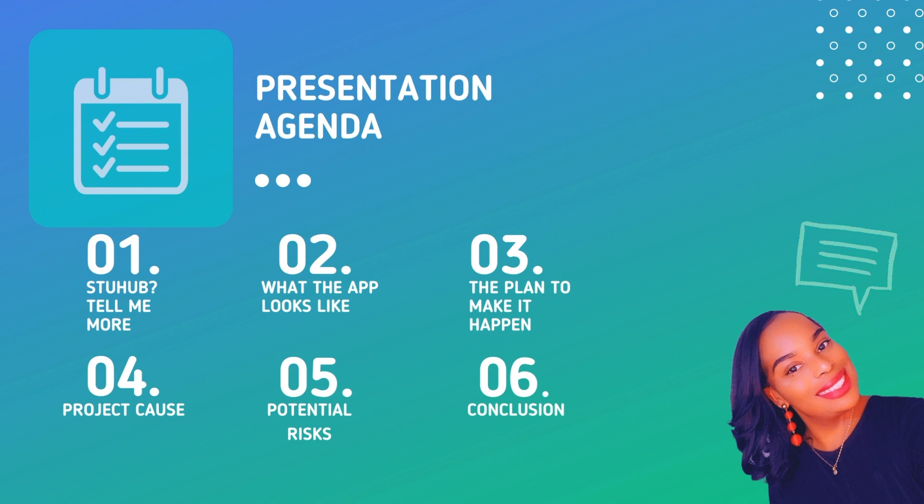Four: project cost. This is where we explore the payback period, justify the benefits compared to budget, and so on. Number five: describing our potential risks. People are likely to critique our project, and it's our job to think ahead, be prepared for weaknesses, and prove the haters wrong. And number six: the conclusion, where we wrap up our presentation and finalize our findings.